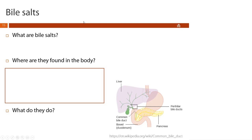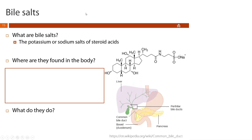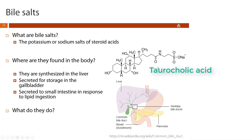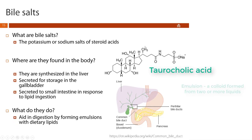Our next group of steroids are bile salts — the potassium or sodium salts of steroid acids. Looking at the structure, we have our four fused rings that make up all steroids and a sulfonic acid group attached to the end, which has undergone a neutralization reaction to form the sodium salt version. These are synthesized in the liver and secreted for storage in the gallbladder, then when we eat something high in fat, they're secreted to the small intestine where they aid in digestion by forming emulsions with the fatty food.